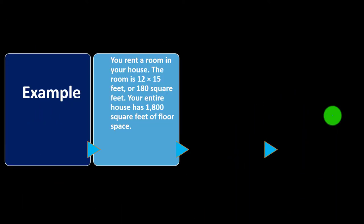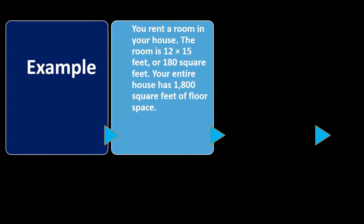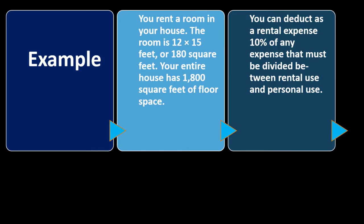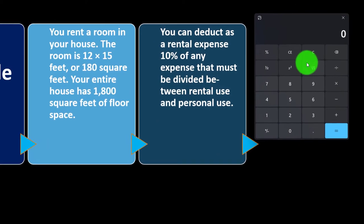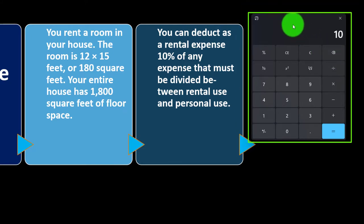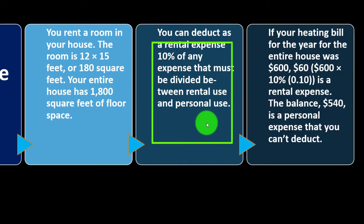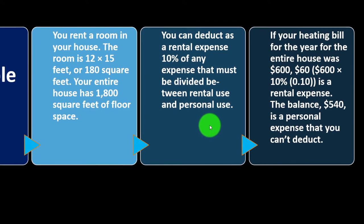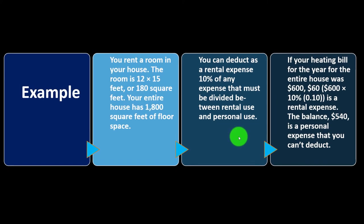Example: you rent a room in your house. The room is 12 by 15 feet, or 180 square feet. Your entire house has 1,800 square feet of floor. So you divide 180 by 1,800 to get 0.1, or 10%. You can deduct as rental expense 10% of any expense that must be divided between rental and personal use. If your heating bill for the year for the entire house was $660, then $66 is the rental expense. The balance, $540, is a personal expense that you can't deduct.